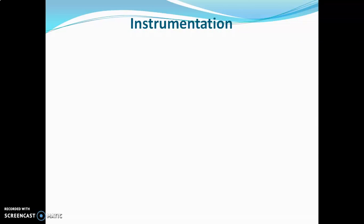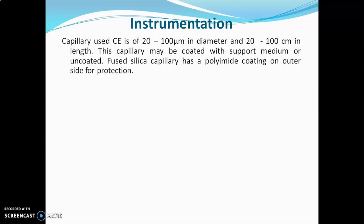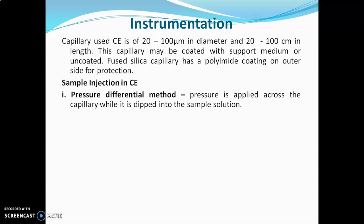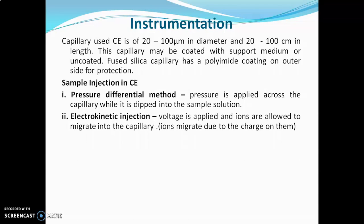Capillary used in capillary electrophoresis is 20 to 100 micrometers in diameter and 20 to 100 cm in length. The capillary may be coated with support medium or it may be uncoated, and there are types of capillary electrophoresis depending on this. The fused silica capillary has polyamide coating on the outer side for its protection. There are two types of sample injection: first is the pressure differential method, where pressure is applied across the capillary while it is dipped into sample solution; and second is electro-kinetic injection, where voltage is applied and ions are allowed to migrate into the capillary.